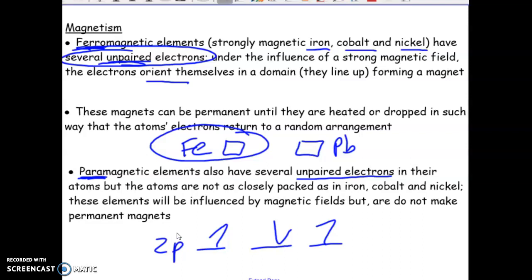A question some people ask is, how long do these magnets last? The magnet actually will stay permanent, whether it's ferromagnetic or not, until something happens to disrupt that alignment of the electrons.